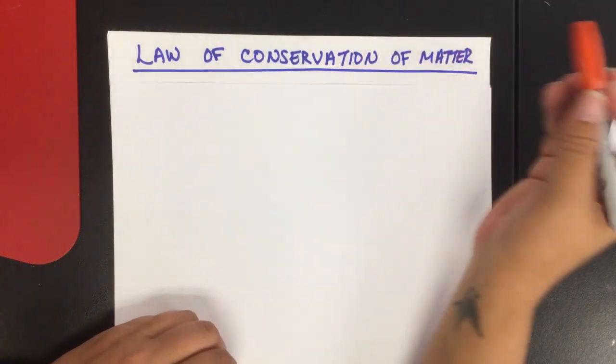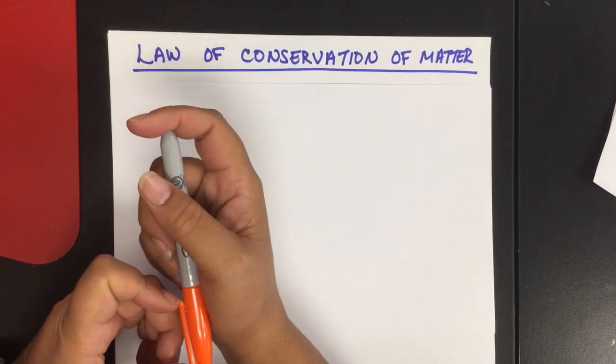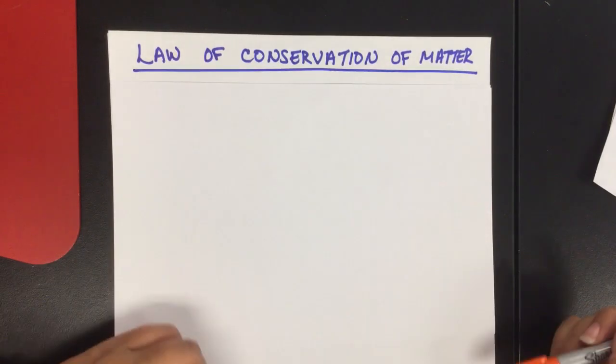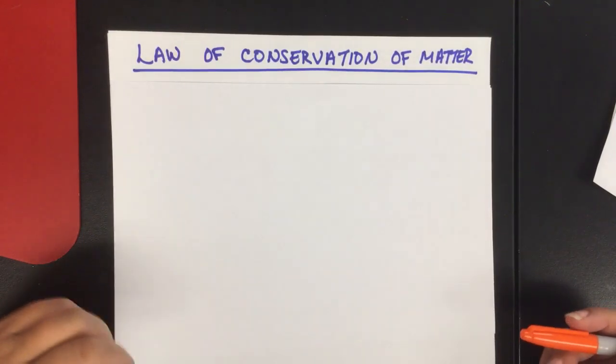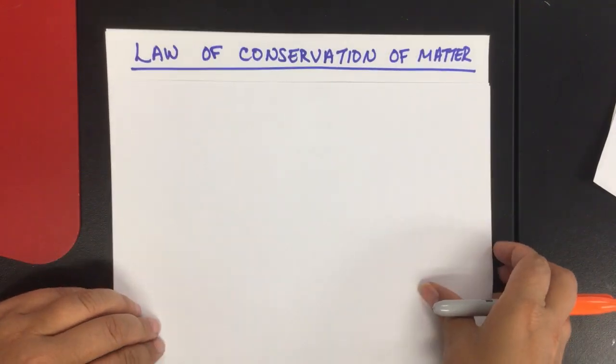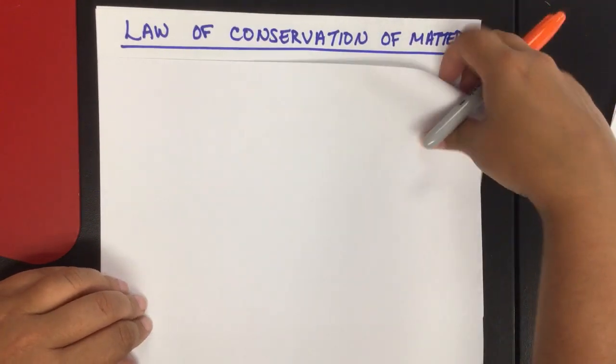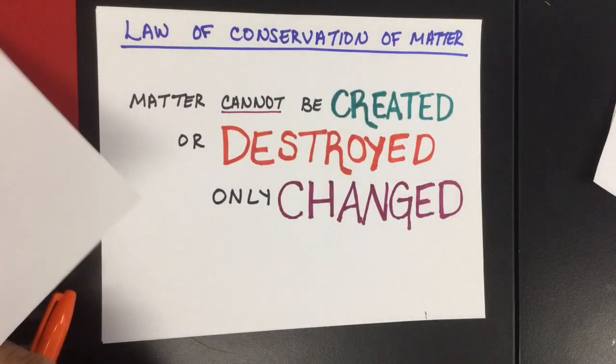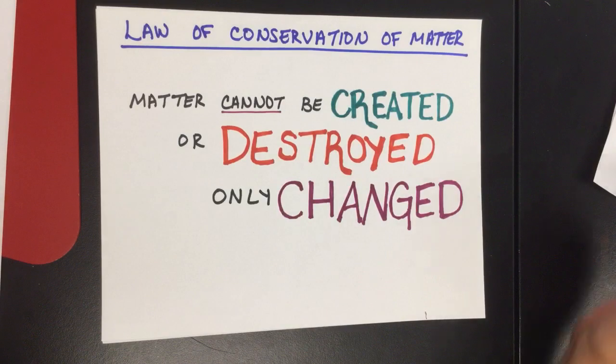All right, this video is going to discuss balancing equations and why we balance equations. The reason we balance equations has to do with the law of conservation of matter, which states that matter cannot be created or destroyed, only changed.